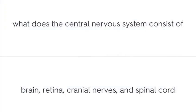What does the central nervous system consist of? The brain, retina, cranial nerves, and spinal cord.